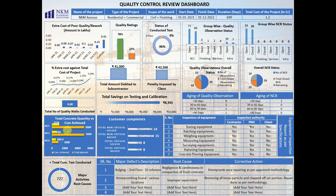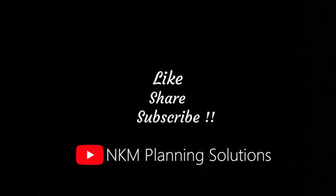Below that you will find the Total Savings on Testing and Calibration, then the Customer Complaint Report, the Total Concrete Quantity versus Cumulative Achieved Status, and the Total Number of Tests conducted at your site. If you want this dashboard, there is a link in the description. Thank you for watching — like, share, and subscribe to our YouTube channel.